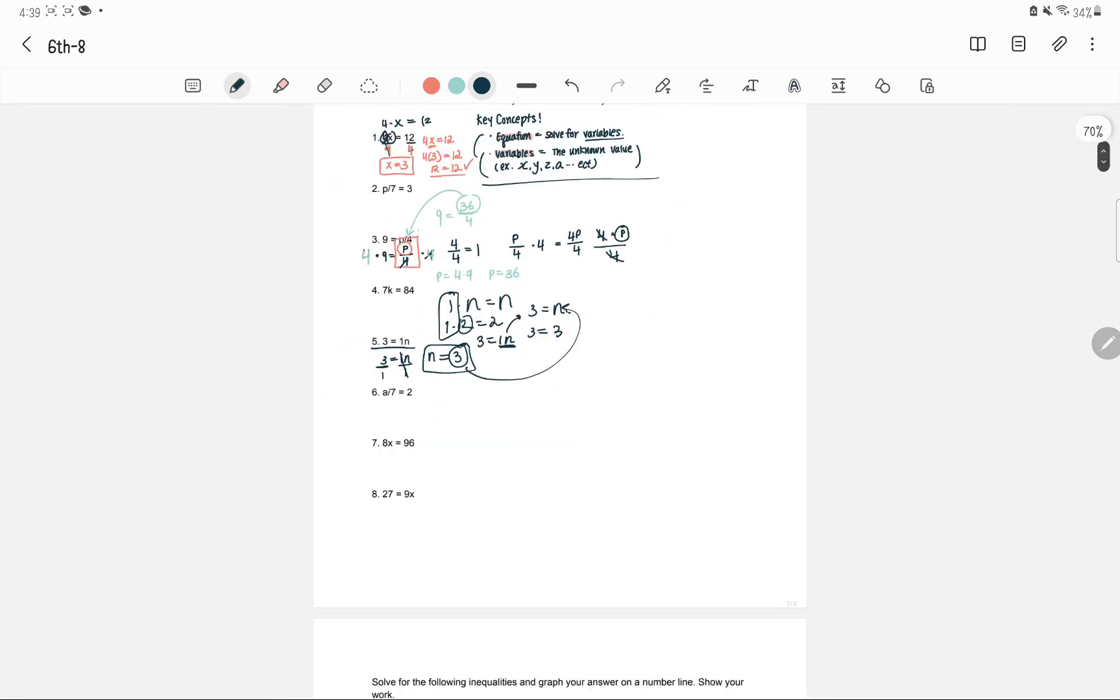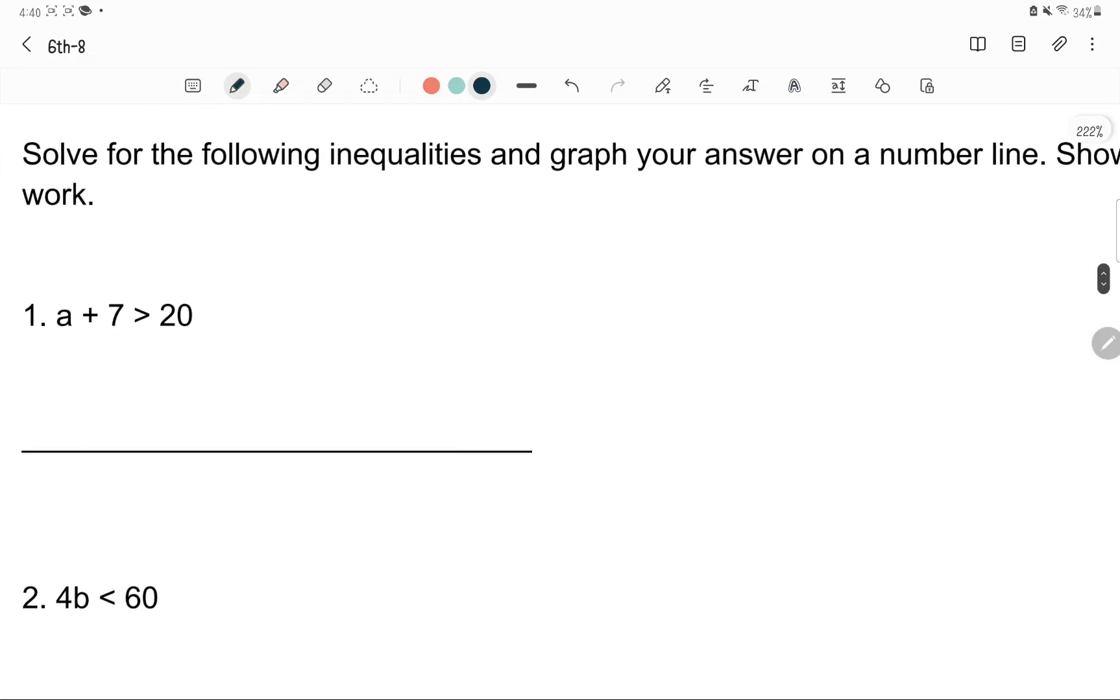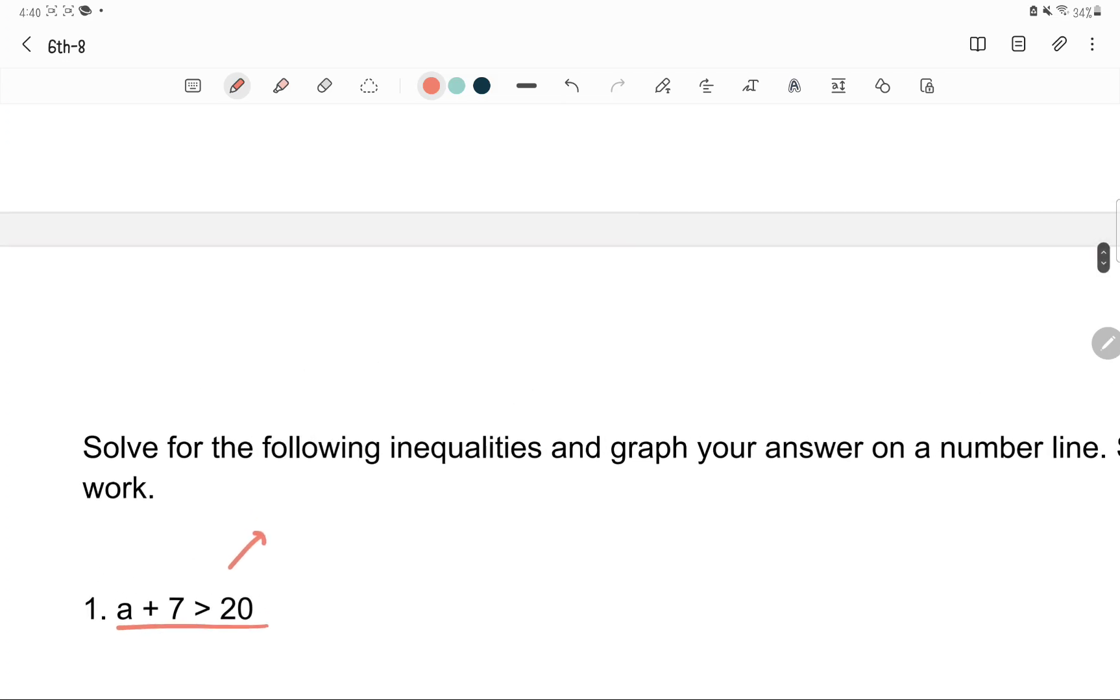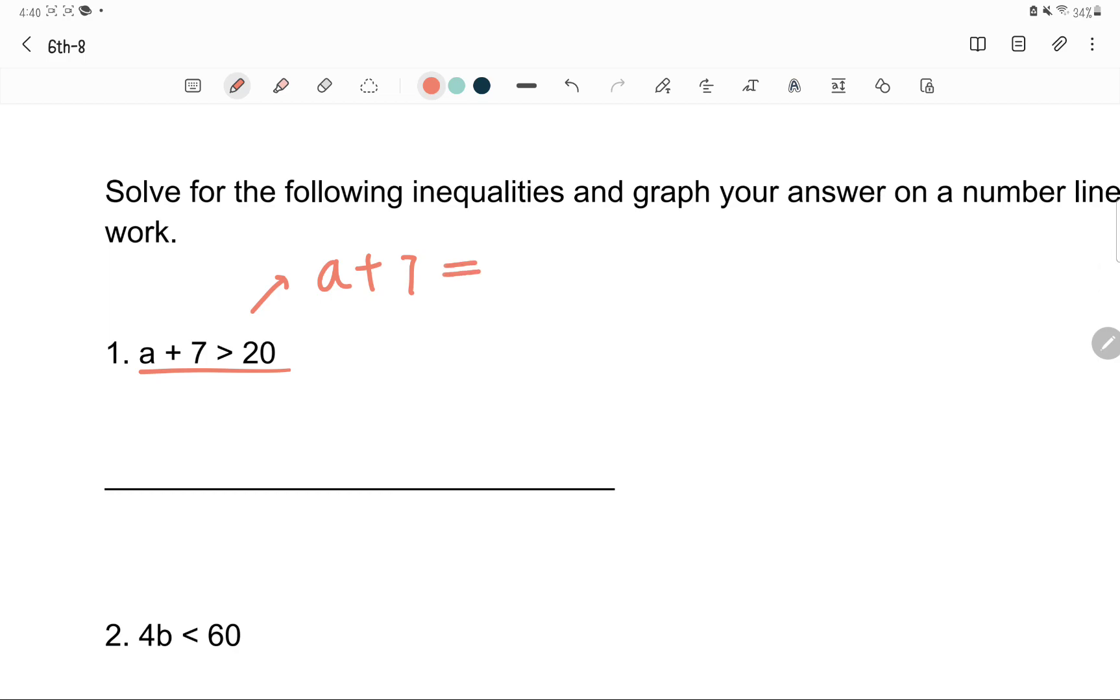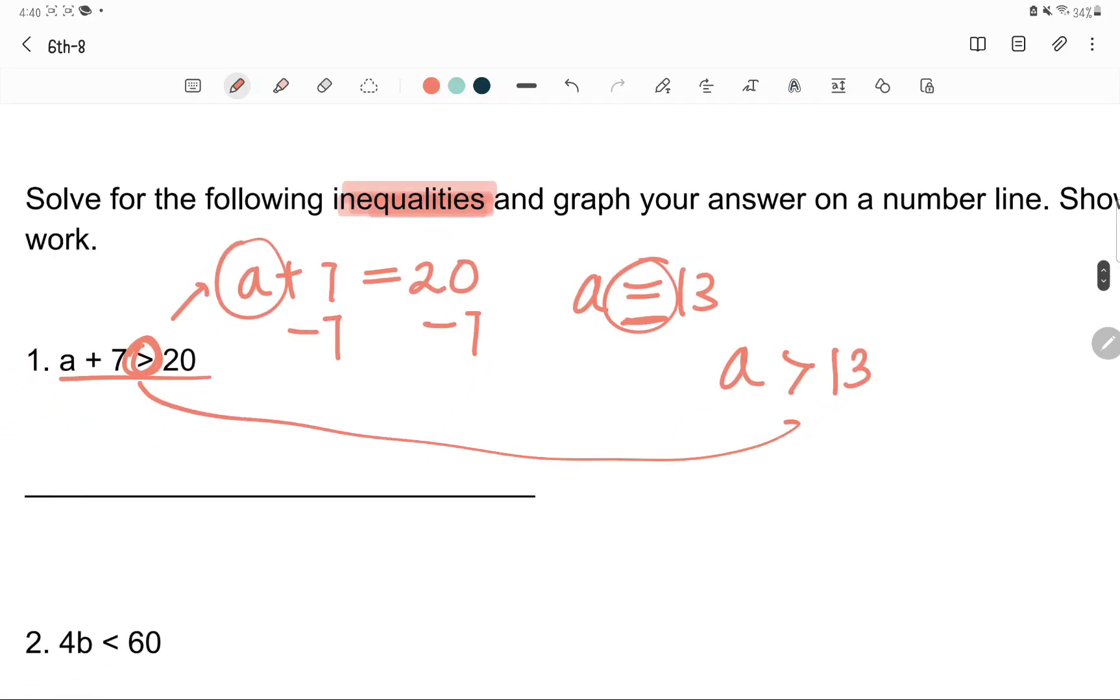This is the pretty basic concept of solving equations. Let's move on to inequalities. This one is really similar to what we just did. Just think of this as a plus 7 equals 20. What do you have to do to get a by itself? You just subtract, right? A equals 13. But this one is an equal symbol, and this one is this symbol, and we're dealing with inequalities. You have to change the equal sign into an inequality sign, and it is very simple. A is greater than 13. Just keep the same.